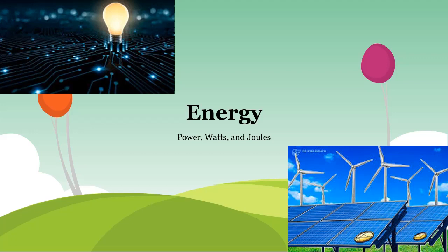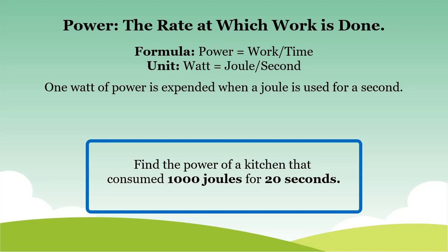Well, what is power? Power is the rate at which work is done. Its formula — power is equal to work divided by time. Its unit is measured in watts, or joules per second. One watt of power is expended when a joule is used for a second.